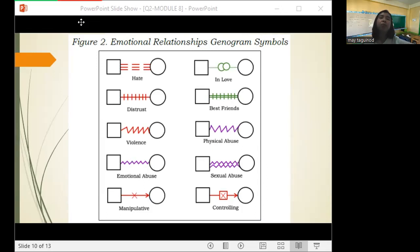And for emotional abuse, it is also zigzag lines but it is mas maliit compared to violence. And in physical abuse, dun sa katapat ng violence. Kung mapapansin ninyo, iba't iba yung zigzag pattern nila. For manipulative, there is an arrow then there is a cross mark at the center.